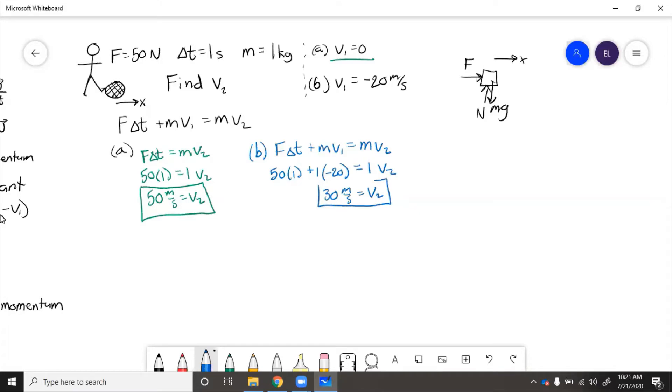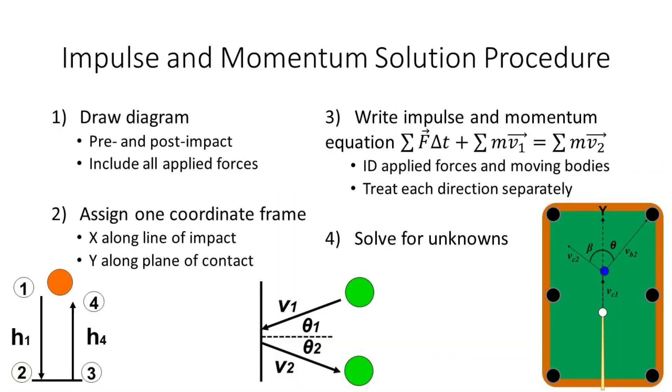So this is smaller than the velocity in the first case, which is expected because it had to change the direction that the ball was moving. The difference between those two velocities is still the same. So 0 to 50 versus negative 20 to 30, that's still a 50 meter per second change.